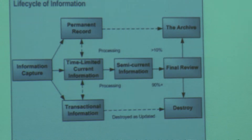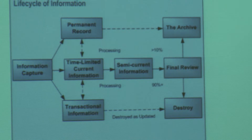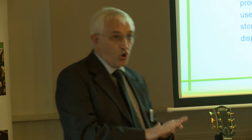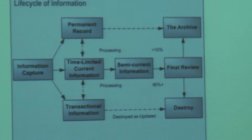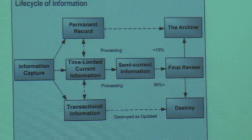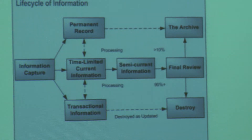Information is captured — without being captured, it doesn't exist. It's processed, and some information is processed more than others. It's used, and even non-use is a form of use. It's stored — this could be electronic, could be paper, it could be as part of the DNA of the object, or it is in our minds. And then finally it's disposed of, which takes it back to a state of non-existence.